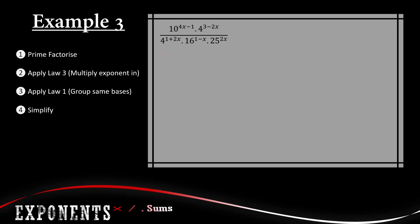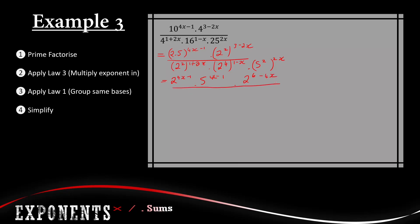For example three, we start by prime factorizing. The first term becomes 2 times 5 to the power of 4x minus 1. The second term becomes 2 squared to the power of 3 minus 2x, all over 2 squared to the power of 1 plus 2x, times 2 to the power of 4 to the power of 1 minus x, times 5 squared to the power of 2x. Getting rid of the brackets: 2 to the power of 4x minus 1 times 5 to the power of 4x minus 1, times 2 to the power of 6 minus 4x, over 2 to the power of 2 plus 4x, times 2 to the power of 4 minus 4x, times 2 to the power of 4x.